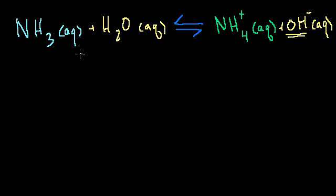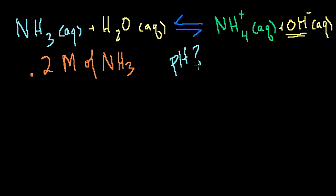But anyway, given that we have, let me pick a random number. Let's say we have 0.2 molar of NH3. What is going to be the pH? So what's going to be our pH of this solution, considering that it's 0.2 molar of NH3?